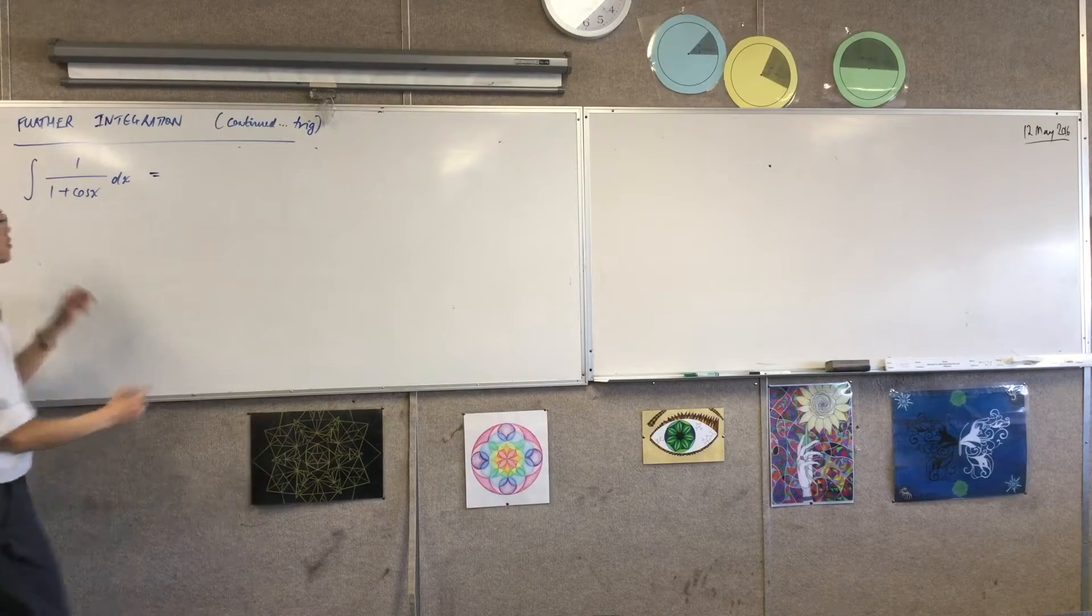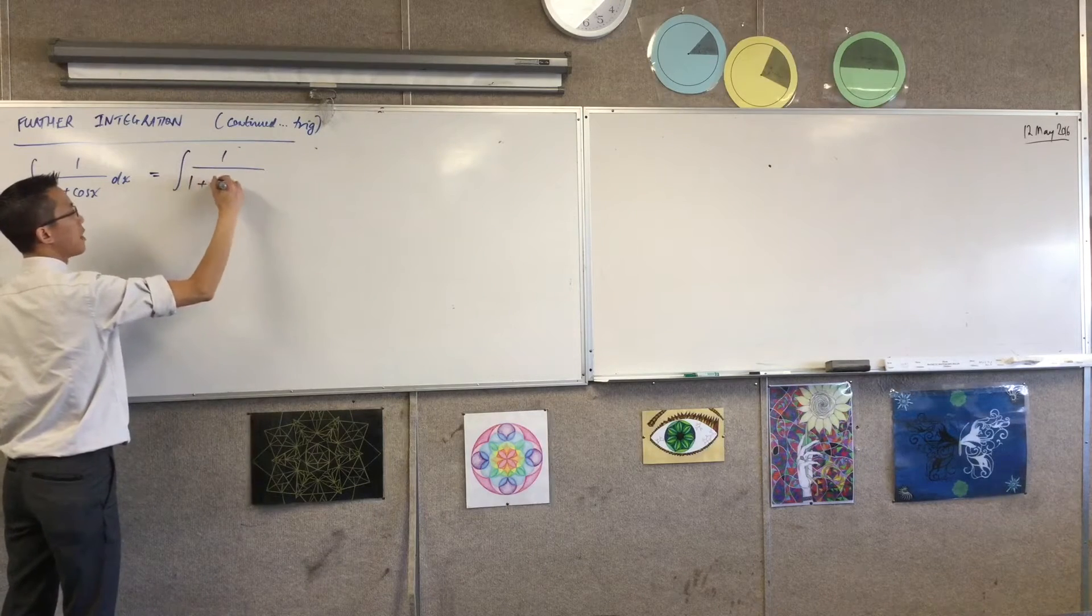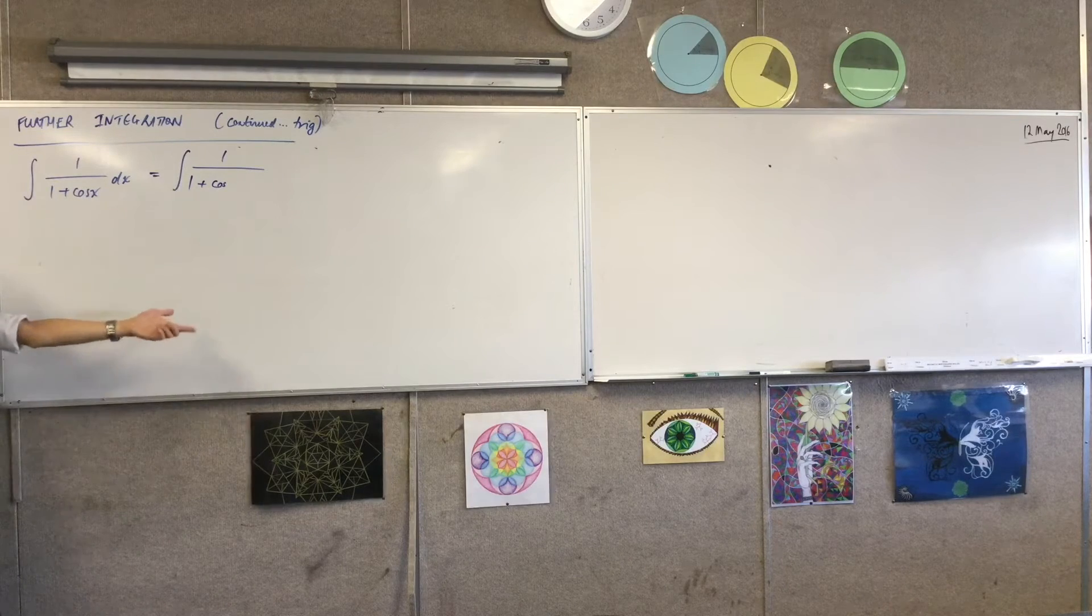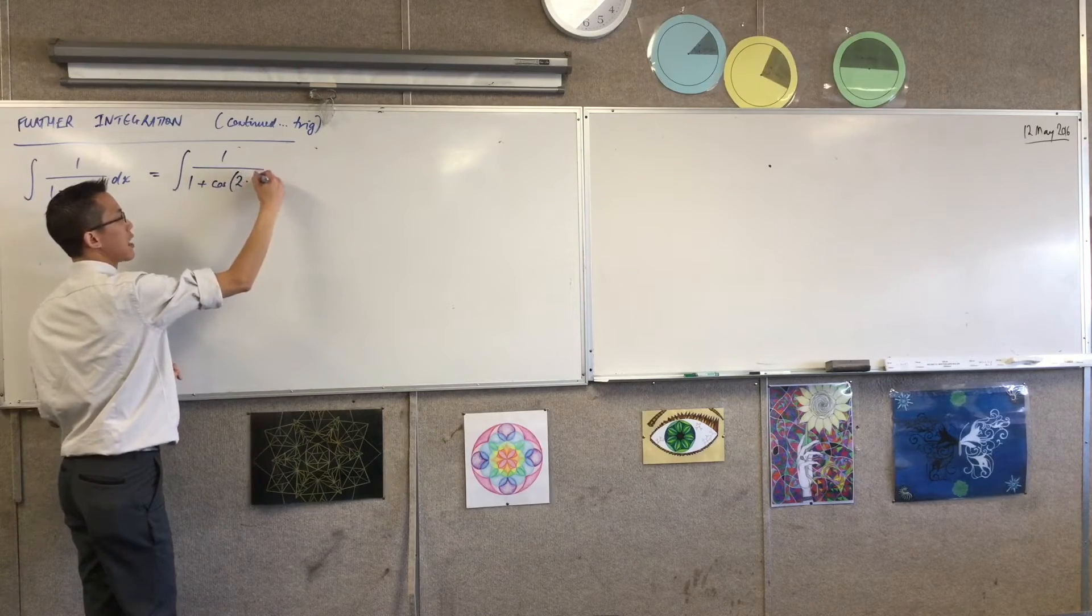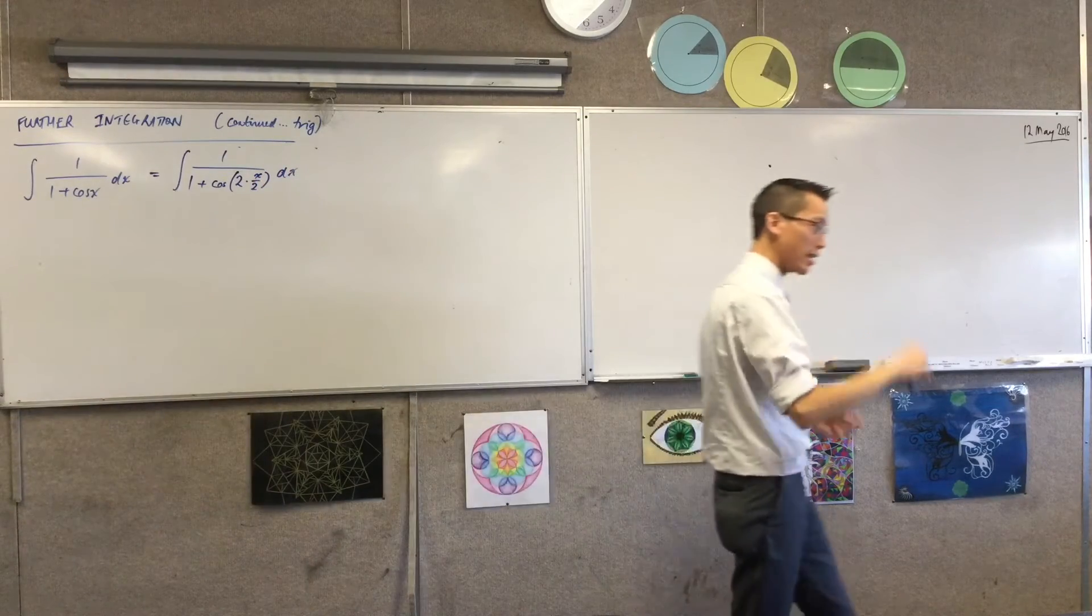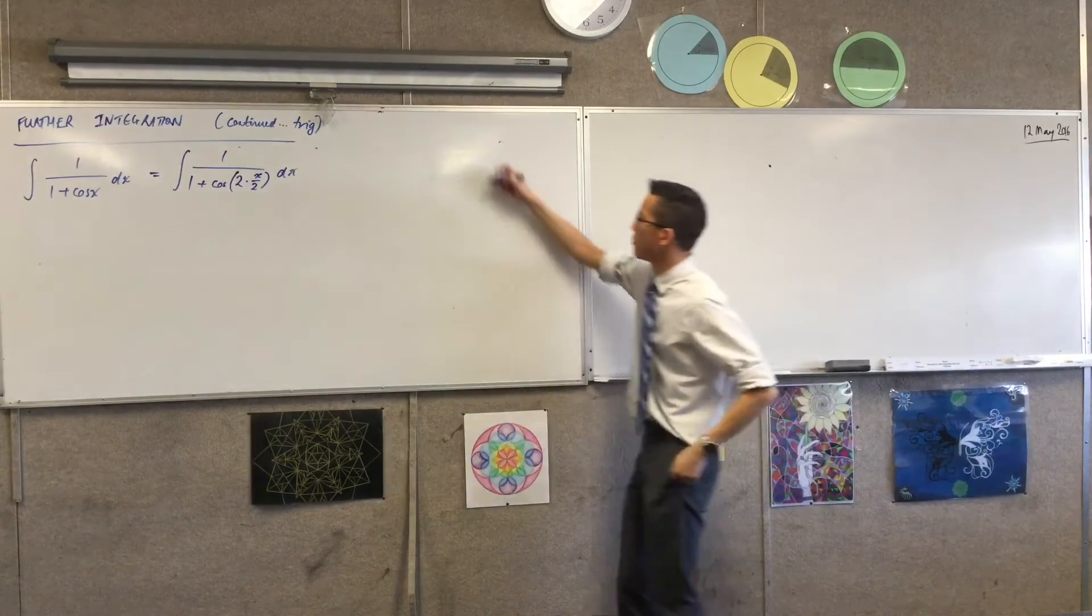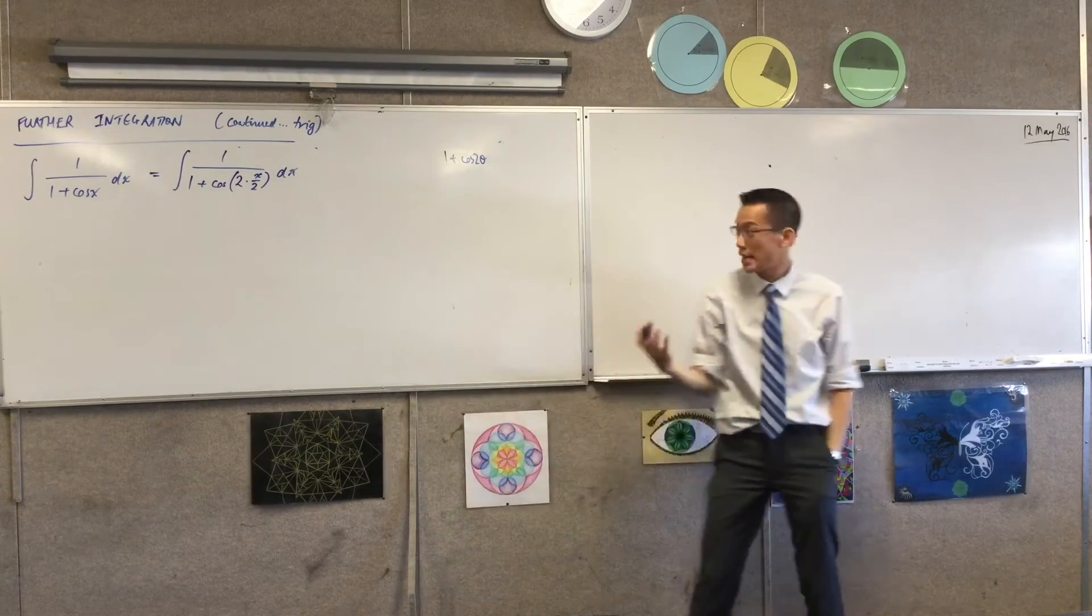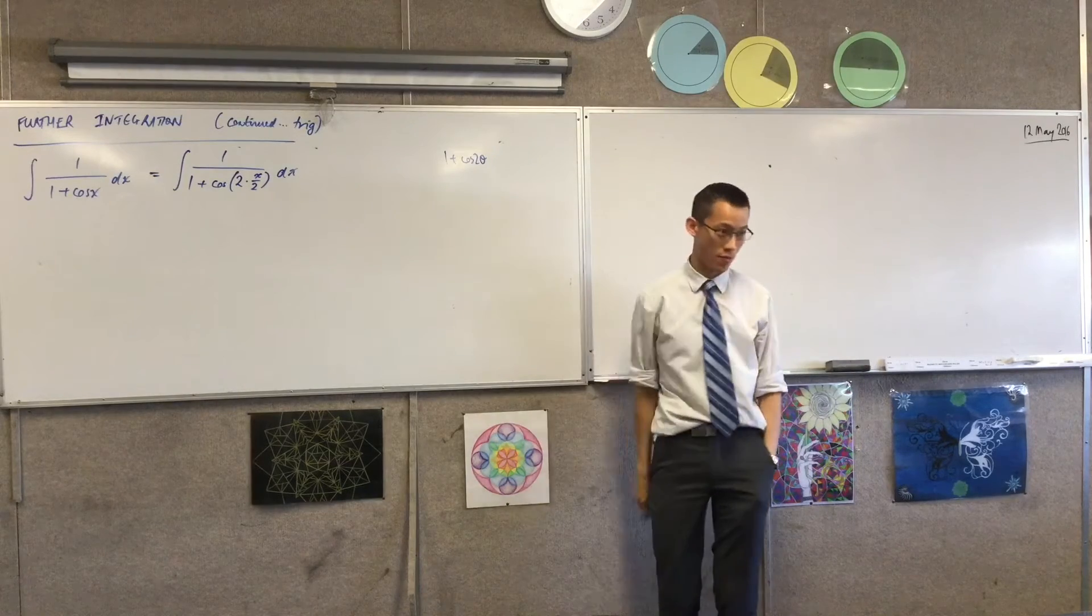So here's what I'm going to write here. What substitution am I going to introduce? I'm going to say this is the integral of 1 over 1 plus, now to write x and take advantage of all the things I know about double angle, I'm going to write the x as 2 times x over 2. There's my double angle there. It just happens that the angle I'm sticking in is x over 2.